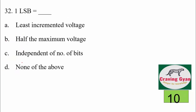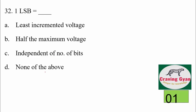32nd question: 1 LSB equals — the least incremented voltage, half the maximum voltage, independent of number of bits, or none of the above. The least significant bit is nothing but the least incremented voltage, hence option A is correct.